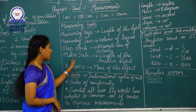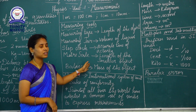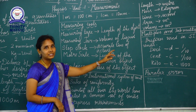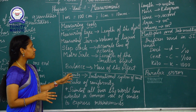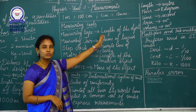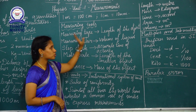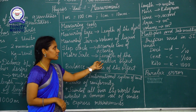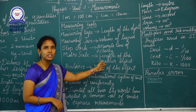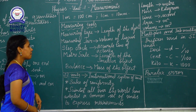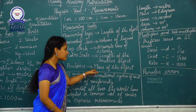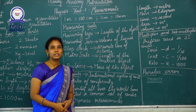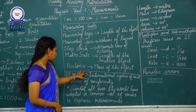Next, meter scale. It is used to measure the length of smaller objects. It is also used to measure the mass of an object. One object's mass and weight can be measured using a balance.